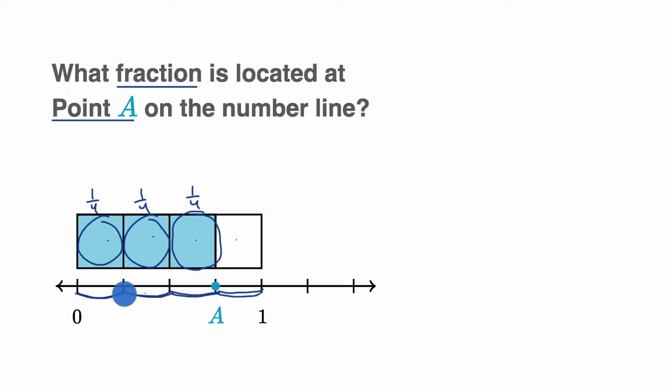And where is point A? Well, we have gone one-fourth, two-fourths, three-fourths past zero, or from zero to one, which is a whole. So what fraction is located at point A on the number line? Three-fourths. Let's do another example.